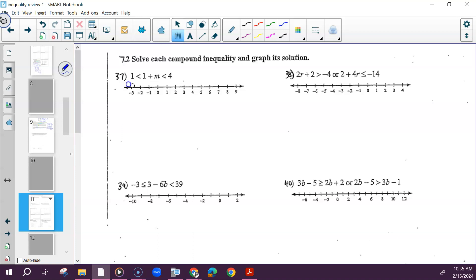This is an and inequality because it's condensed. So get M by itself by getting rid of 1, subtract it on all sides. We have 0 is less than M, which is less than 3. And then you can draw both parts and show where they overlap. But you really just need this part from 0 to 3 with a line between. And if we were to do that interval notation, these would both be parentheses from 0 to 3.